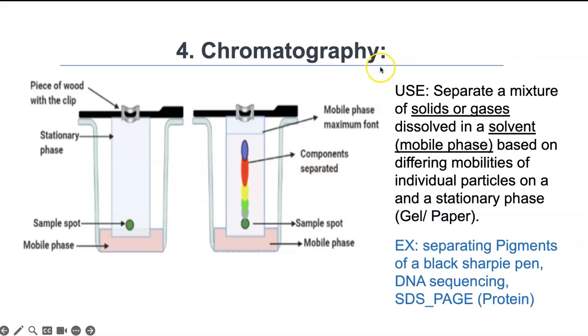Finally, we're going to talk about chromatography. This is used to separate a mixture of solids or gases dissolved in a solvent. The solvent is called the mobile phase. There are fancy versions of this called gas and liquid chromatography that are used in chemistry and biochemistry to identify compounds in a mixture. This is based on the different mobilities—speed of movement—of individual particles in a mixture.